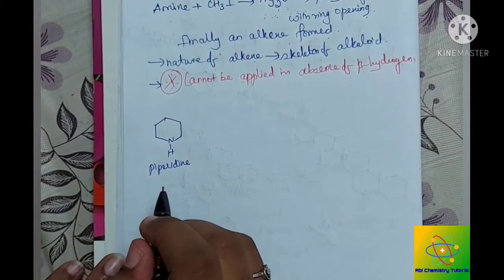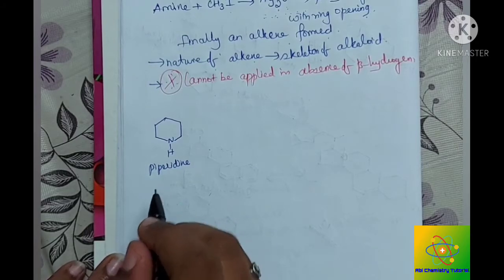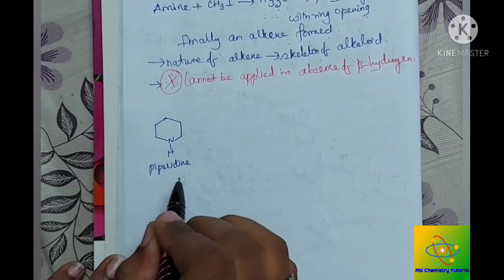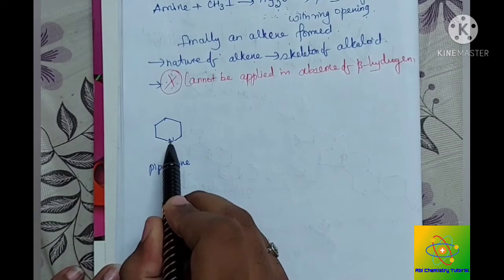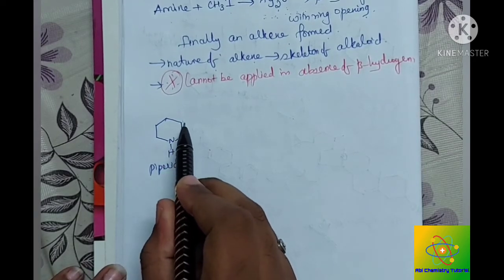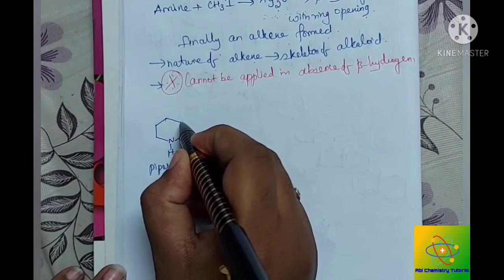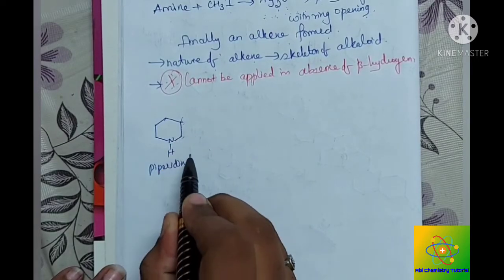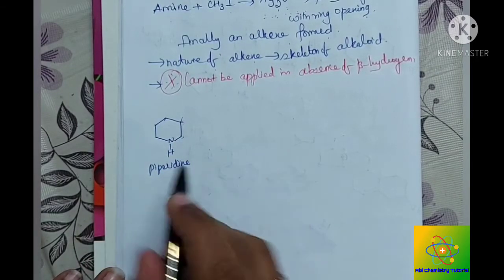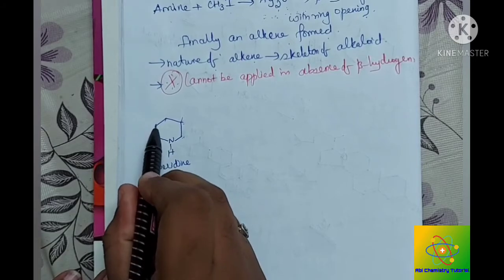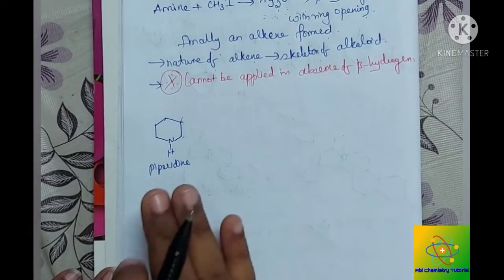I will explain this method with a simple example, piperidine. Let this be the structure of piperidine, and this is the nitrogen. This is alpha and this is beta position. Here we have beta hydrogen, so this process can be applied. On both sides we have beta hydrogen, so this Hofmann exhaustive methylation can be applied to piperidine.